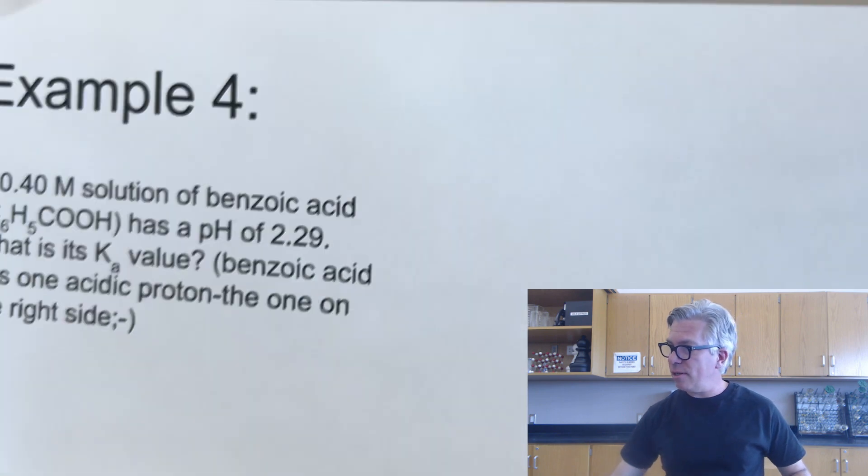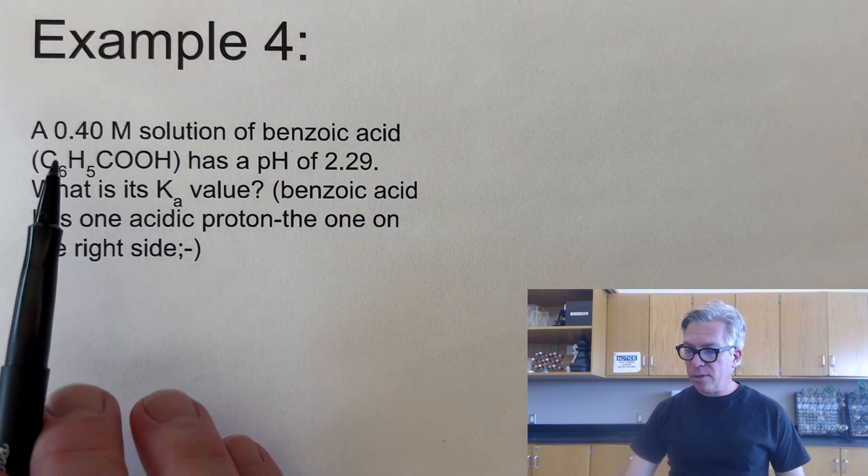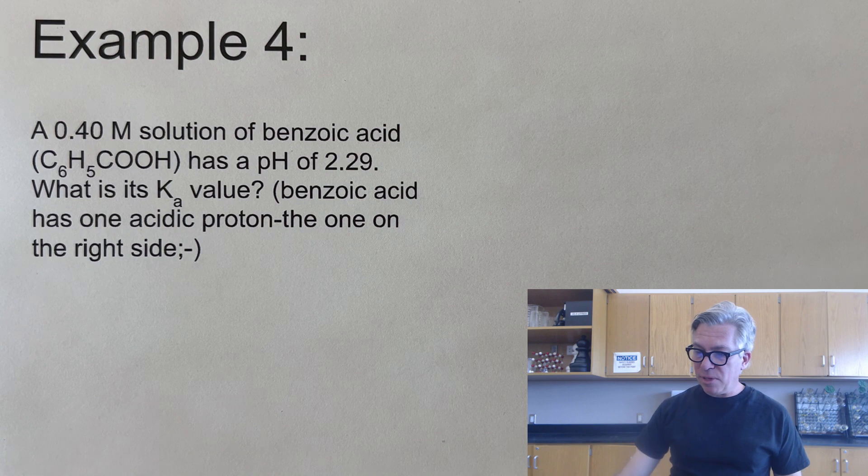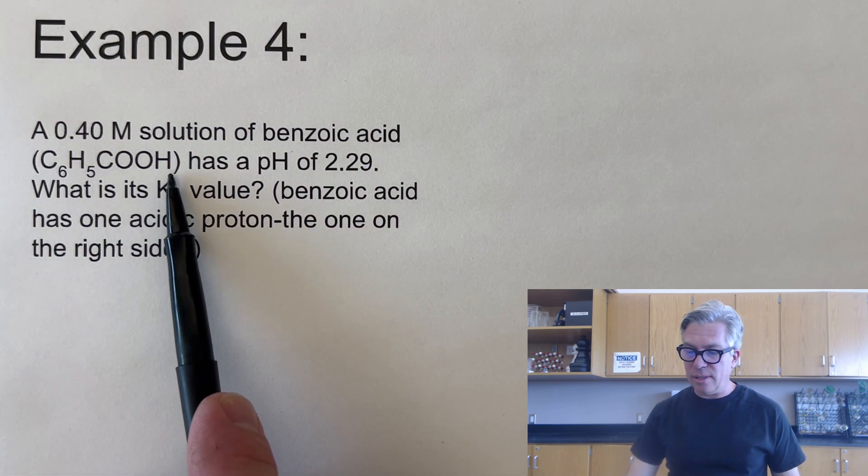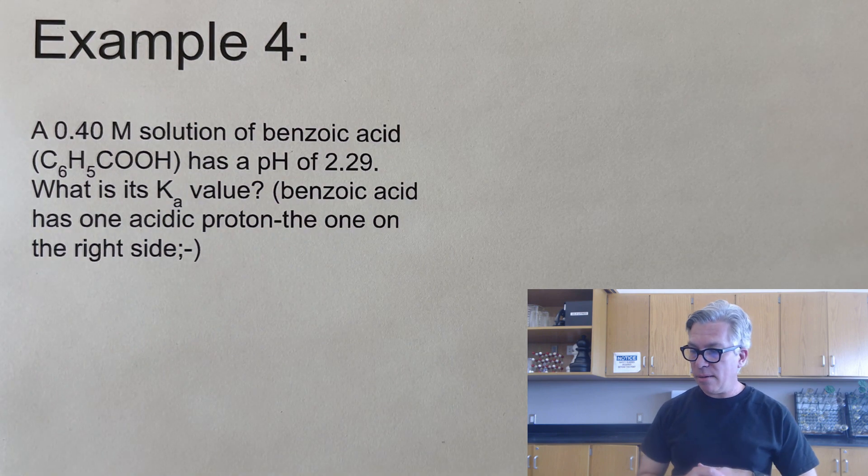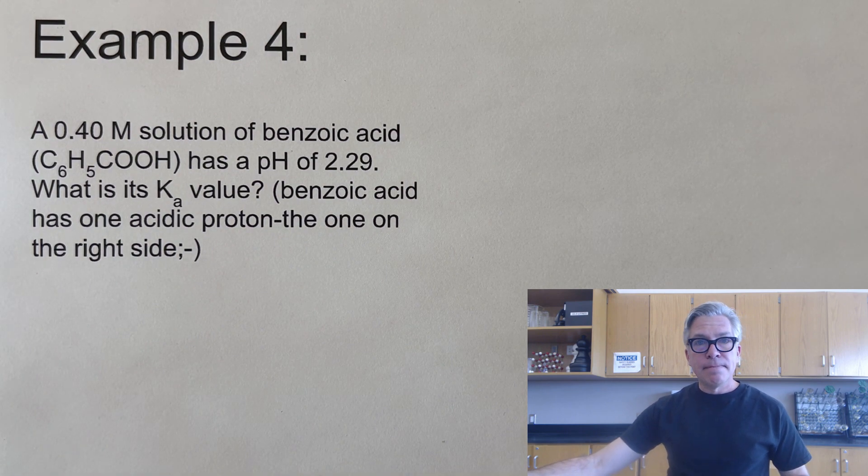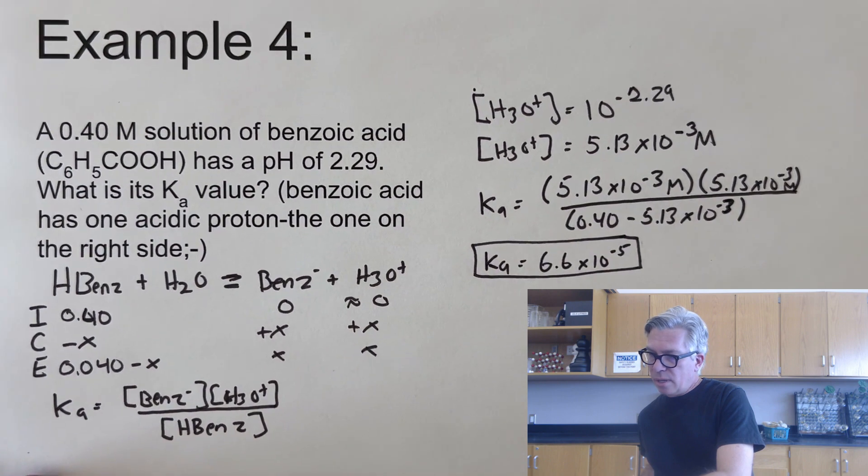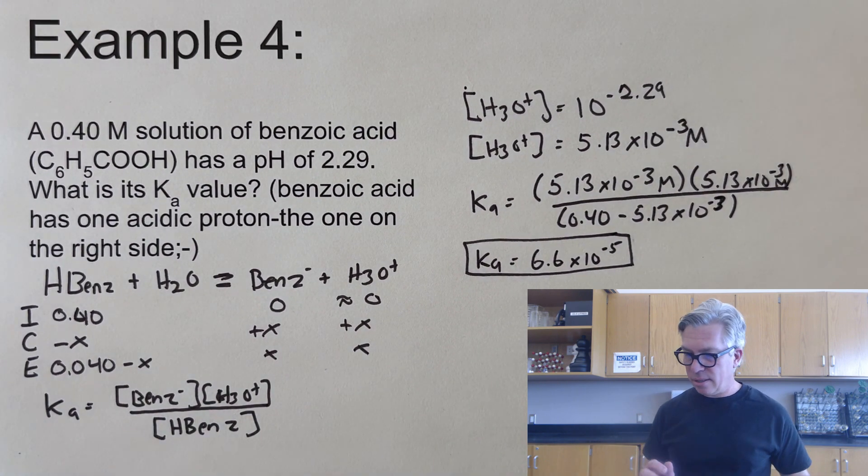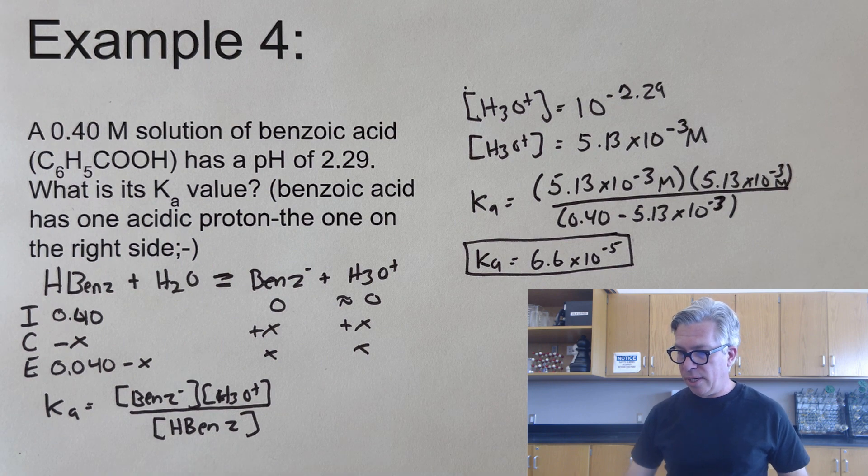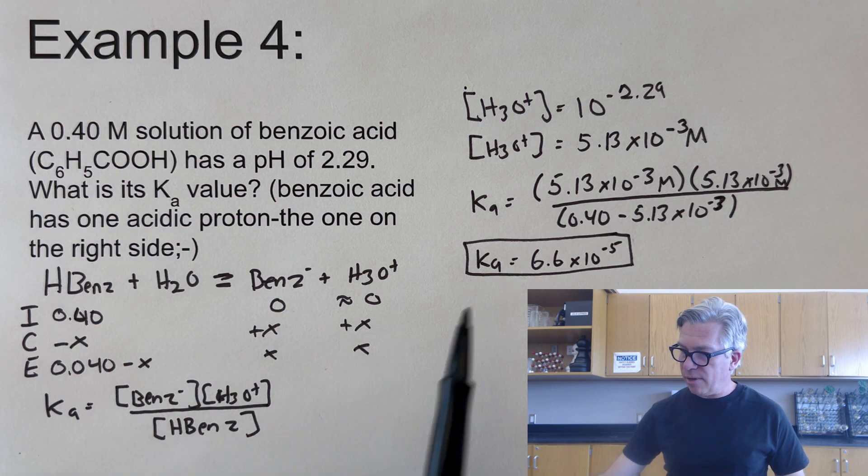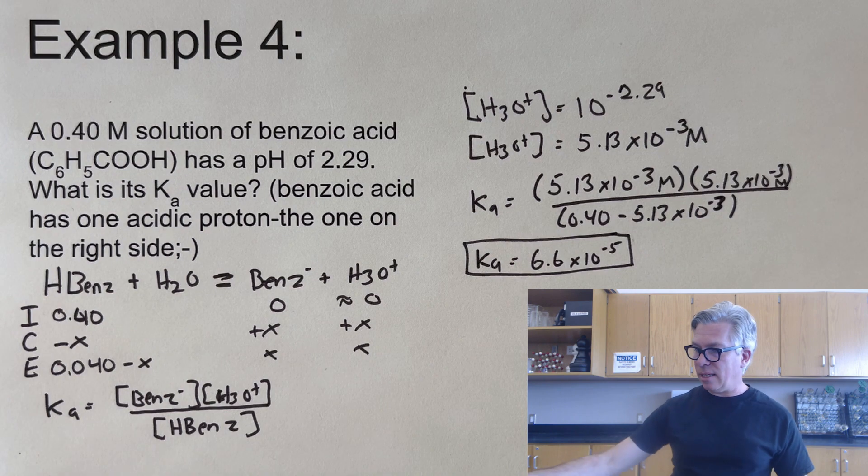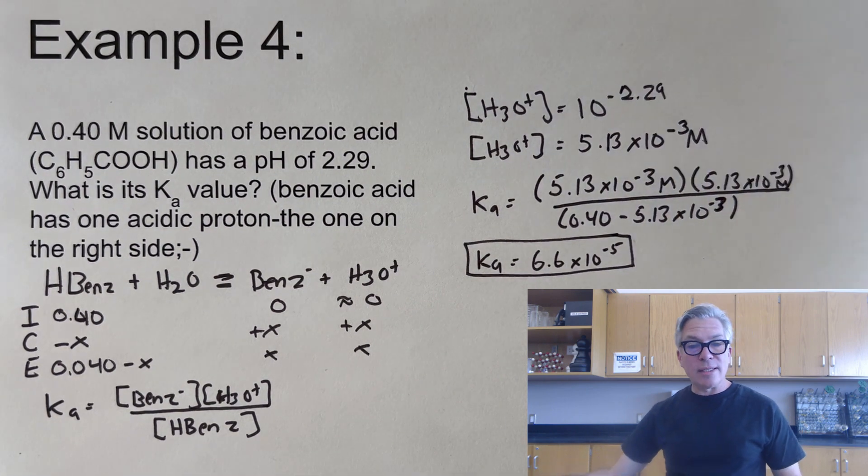And here's our second pause the video moment of the video. And this time we have a 0.4 molar solution of benzoic acid and it has a pH of 2.29. What is its Ka value? Fun fact, benzoic acid has one acidic proton and it's generally listed as the one on the right-hand side. And when I did this one I got an answer of 6.6 times 10 to the minus fifth on that one. So again, same idea, same kind of equilibrium expression, went to find the H3O+ concentration, plugged it into my expression and solve for Ka. So that's a second example of a weak acid equilibrium type of problem.